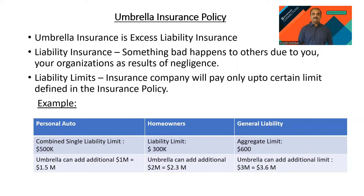In those scenarios we have to bring in an umbrella policy. The umbrella policy's core functionality is to provide additional liability limits. For example, if you have a personal auto policy with a combined single liability limit of 500k, the insurance company will pay a maximum of 500k. If damages exceed that, the insured bears the risk — so you need to buy an umbrella policy.